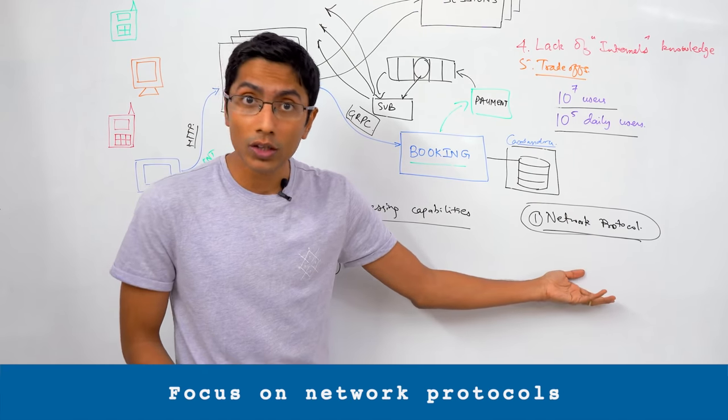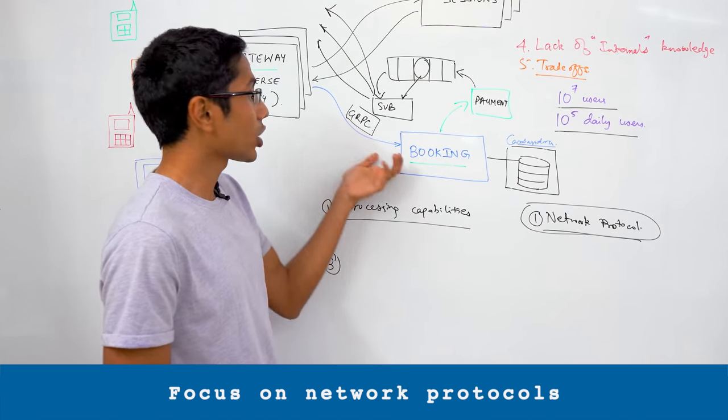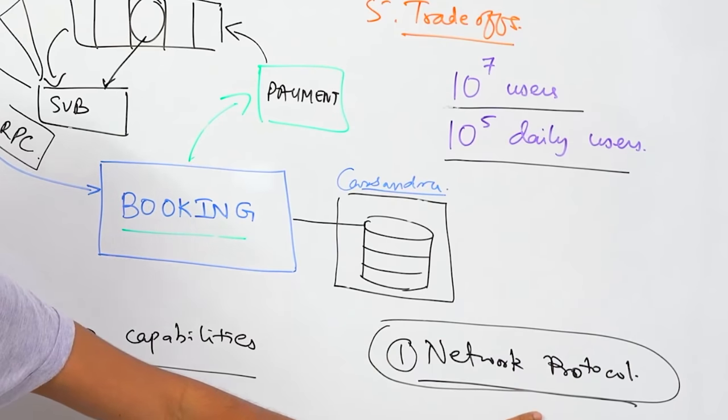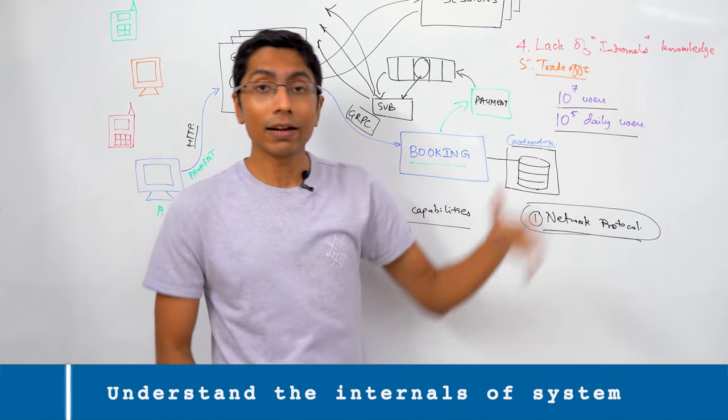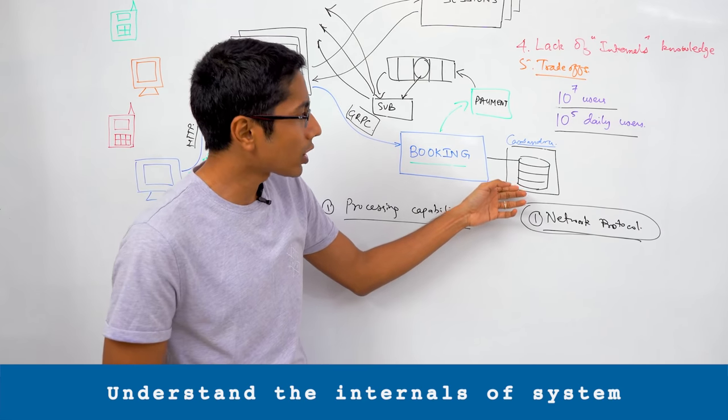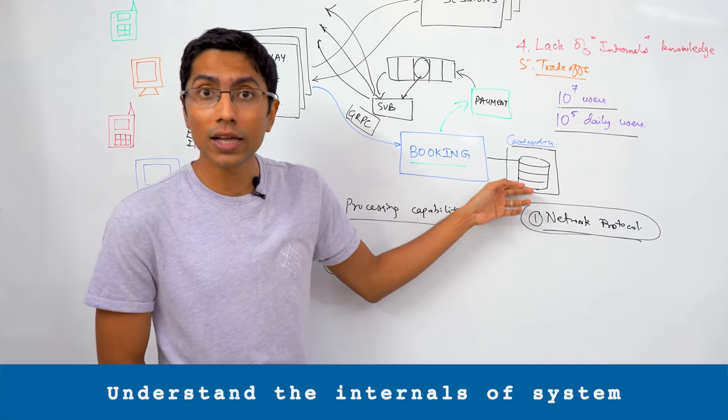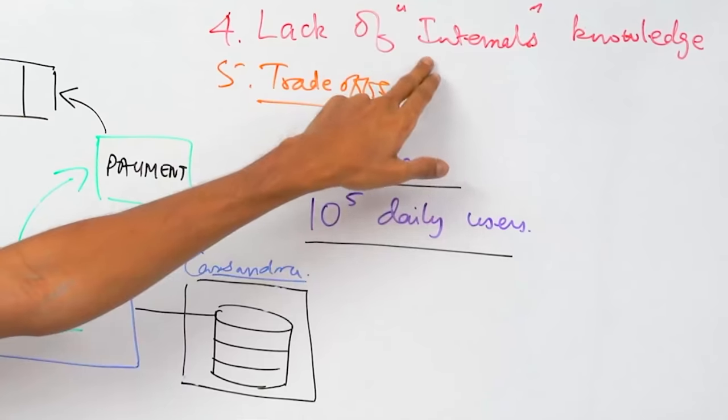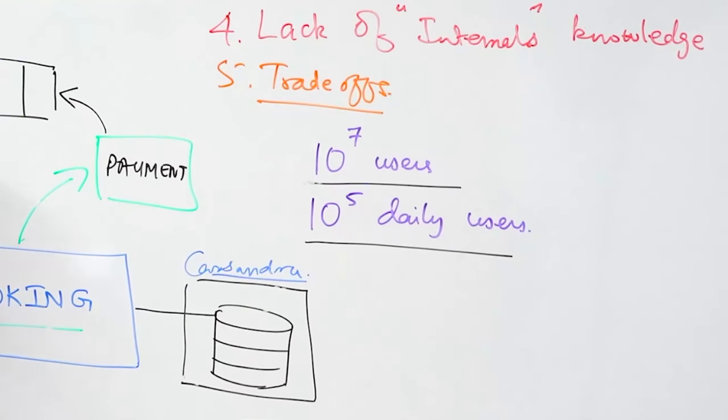Point number three, think about networks. Think about the way in which you're communicating with microservices. So network protocols are something that we should know deeply. The fourth point is that we need to know the internals of databases more often than not to understand what are the possible problems and solutions that they bring in. Point number five is trade-offs. Only after you know some of the internals of these systems will you be able to judiciously choose one approach over another.